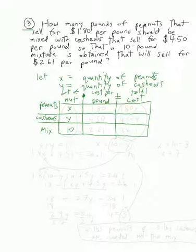The cost per pound is also given: $1.80 for peanuts, $4.50 for cashews, and $2.61 for the mix. For the total cost column, $1.80 times x is 1.80x, $4.50 times y is 4.50y, and $2.61 times 10 is $26.10.